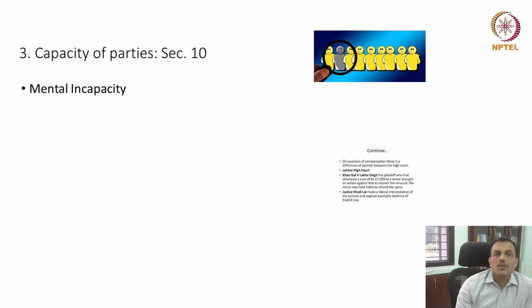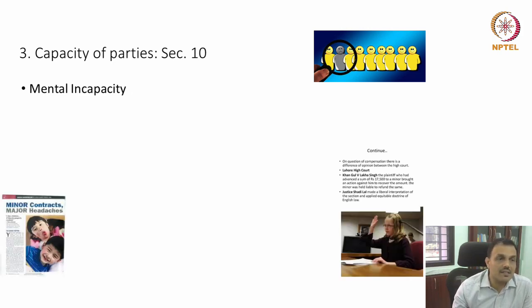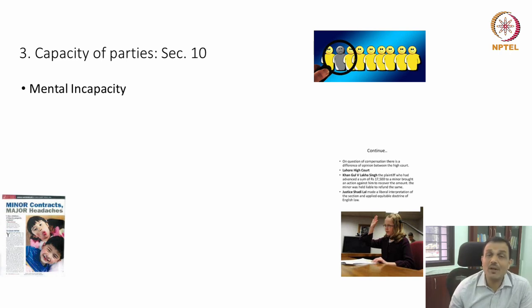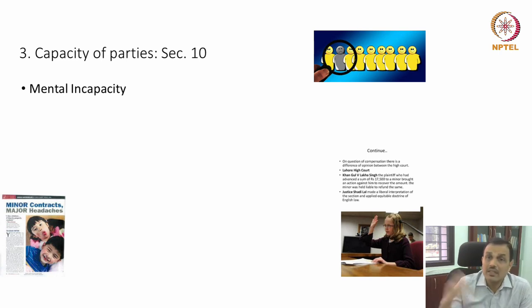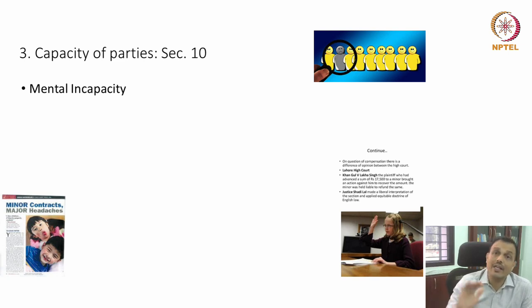When we talk about capacity of parties, you divide it into mental and physical capacity. Mental incapacity arises basically because of age — the maturity of mind has not come to the stage where one should be allowed to make a contract. The Indian Contract Act itself does not prescribe a specific age; it just says minors are excluded and you have to be a major. For the age of majority, we refer to another legislation — the Indian Majority Act — which is a complementary legislation to the Indian Contract Act.